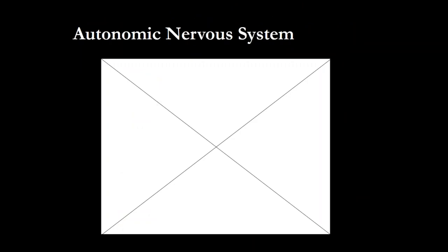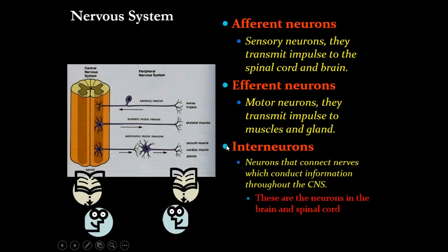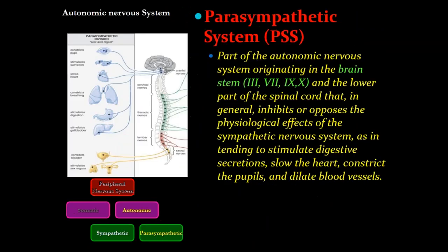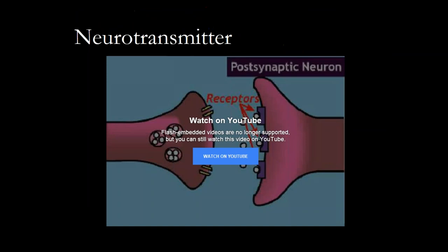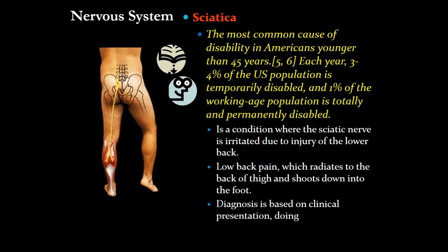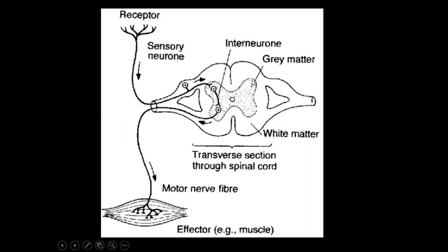Remember the interneurons — they participate in the reflex arc. In the reflex arc, the sensory neuron enters the posterior portion of the spinal cord. The efferent is the motor nerve that makes the muscle contract. The interneuron is a bypass — instead of going to the brain, the signal goes directly from the afferent to the efferent. That is the reflex arc.